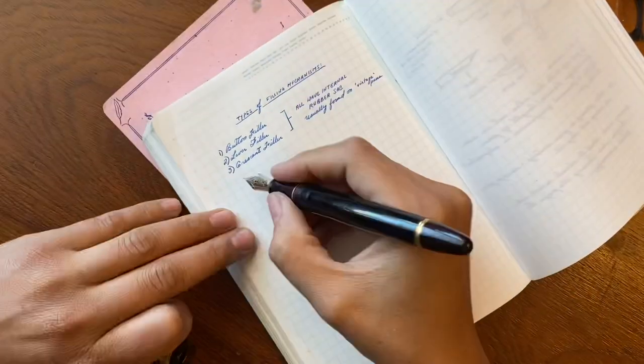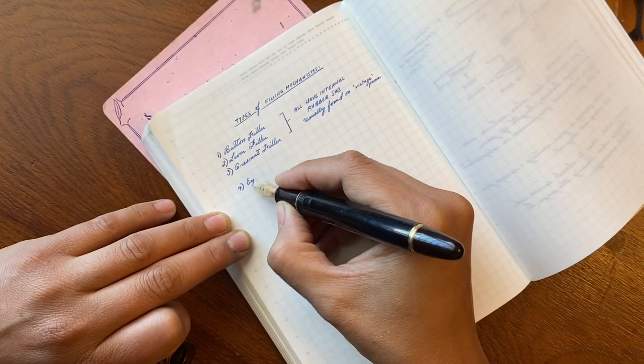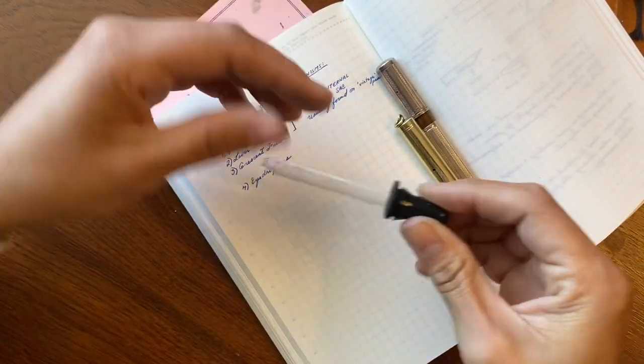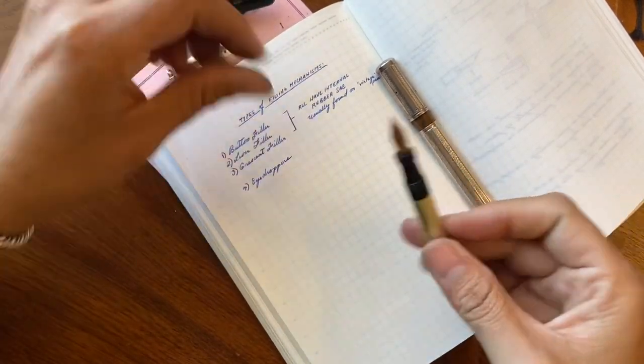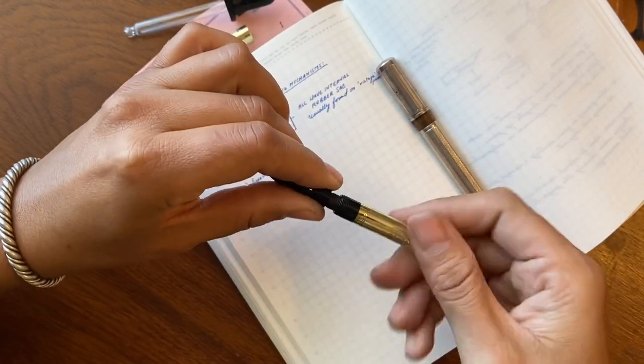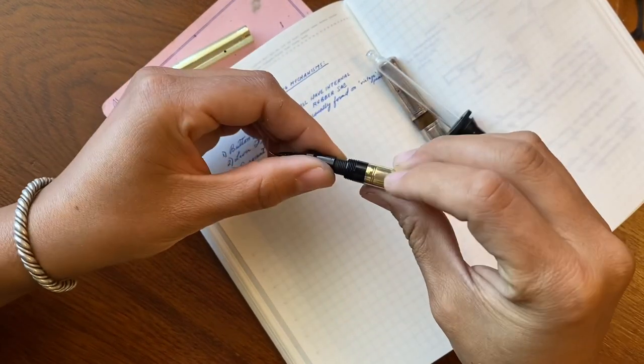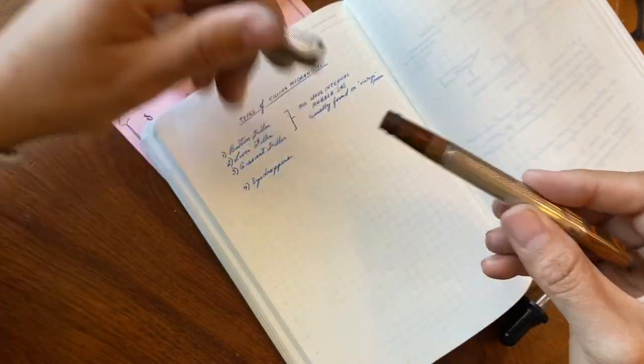The simplest filling mechanism is the eyedropper. Basically you use an eyedropper, it's pretty self-explanatory, and you put the ink directly into the body. Sometimes you need to burp these pens because an air bubble gets trapped inside and has no way of being released.